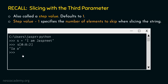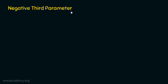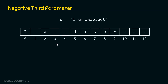Now let's move on to the next topic: negative third parameter. We will consider the same example string 'imjaspreet' placed within an array to better visualize the concept. Let's assume we have typed s[2:10:2] in our Python interactive shell. The first parameter is 2, meaning the starting point is index 2. To know the stopping point, we subtract 1 from the second parameter, giving us 9. To know how many elements to skip, we subtract 1 from the step value, giving us 1 — meaning we skip one element every time while reading from index 2 to 9.